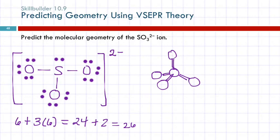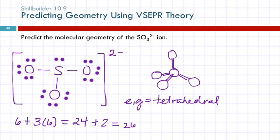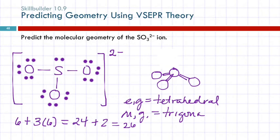How many electron groups surround the sulfur atom? Four — three single bonds and one lone pair, each counting as one group. What shape do four groups make? A tetrahedron. So the electron geometry is tetrahedral. For the molecular geometry, we check if any groups are lone pairs — yes, one of them is. So I take that ball off my ball-and-stick model and describe what's left: it's trigonal, but it's not flat — it's a pyramid. So the molecular geometry is trigonal pyramidal.